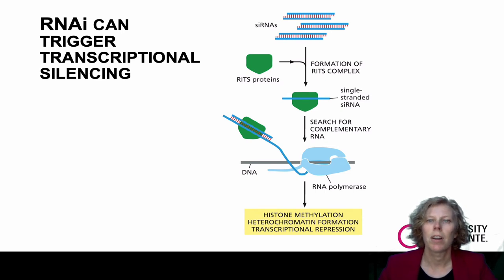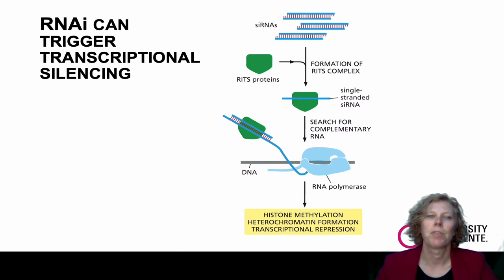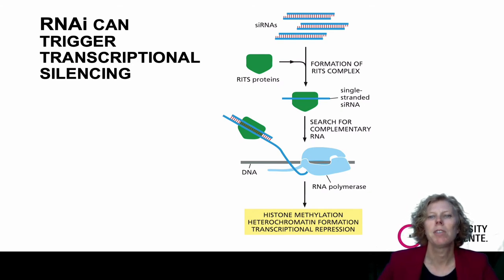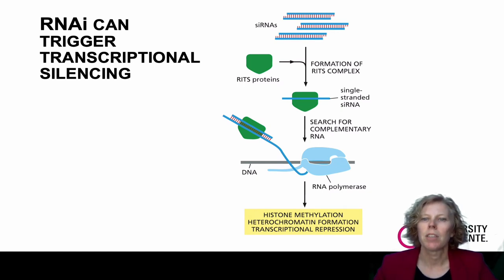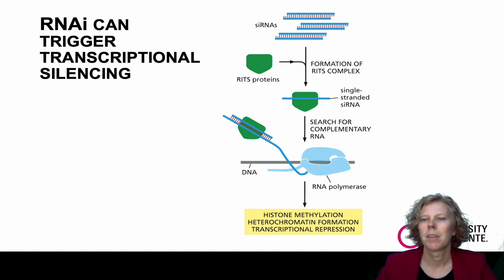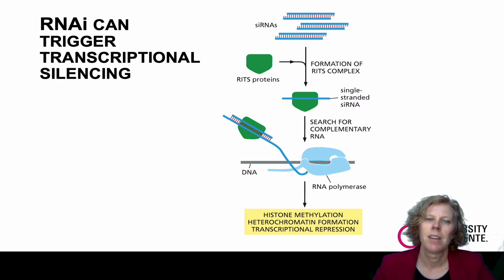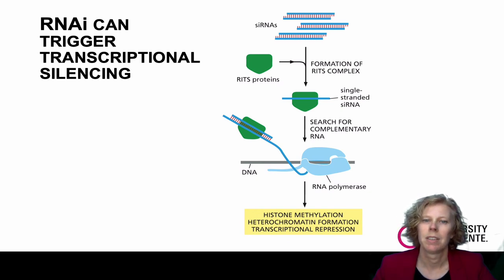RNA interference, or RNAi, can also trigger transcriptional silencing. In this case, a single-stranded siRNA is incorporated into an RNA-induced transcriptional silencing, or RITS, complex, which uses the single-stranded siRNA to search for complementary RNA sequences as they emerge from a transcribing RNA polymerase. The binding of the RITS complex attracts proteins that promote the modification of histones and the formation of tightly packaged heterochromatin. This change in chromatin structure, directed by complementary base pairing, causes transcriptional repression. Such silencing is used in plants, animals, and fungi to hold transposable elements in check — small DNA segments that move from one genomic location to another.